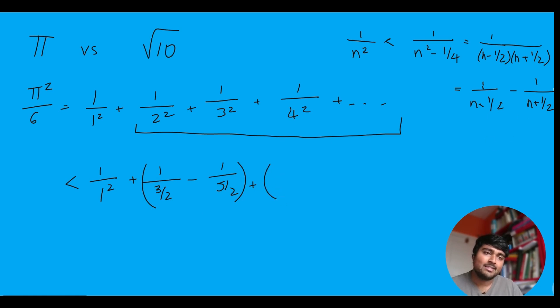Okay, what if we plug in n is 3 into this expression? Well, we're going to get 1 over 3 minus half, so that's 1 over 5 over 2 minus 1 over 7 over 2. Okay, cool.